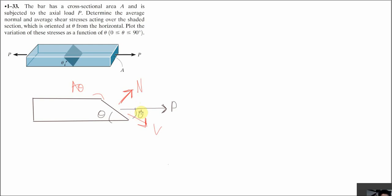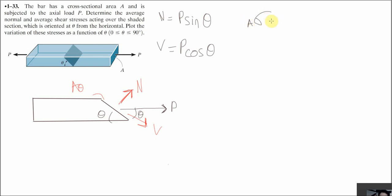The angle is theta, so the N force will be P sine theta and the V force, or the shear force, will be P cosine theta. If we remember, the formula for the average normal stress is P over area, and for the average shear stress it is V over area. We now have the normal force N and the shear force V.